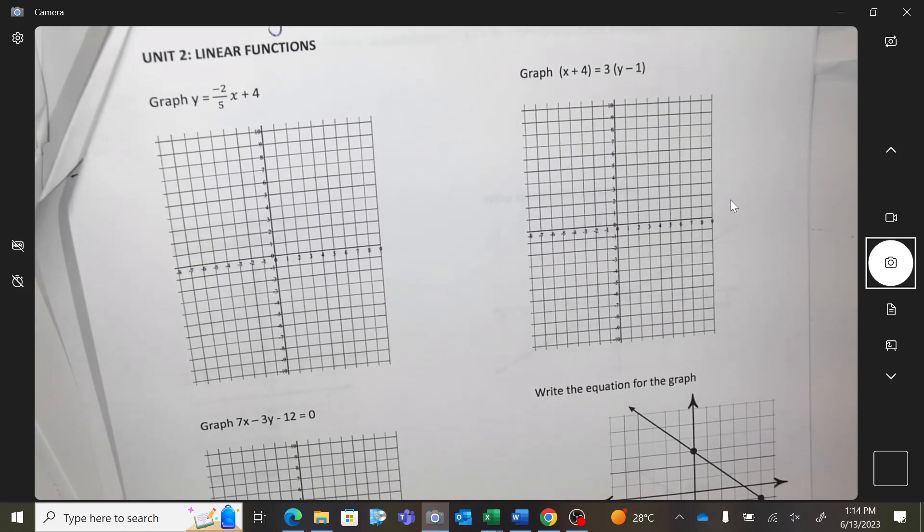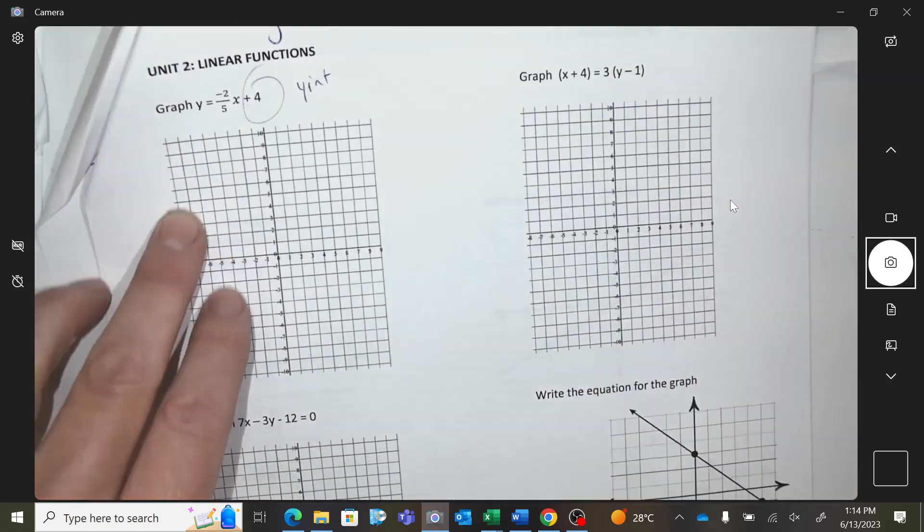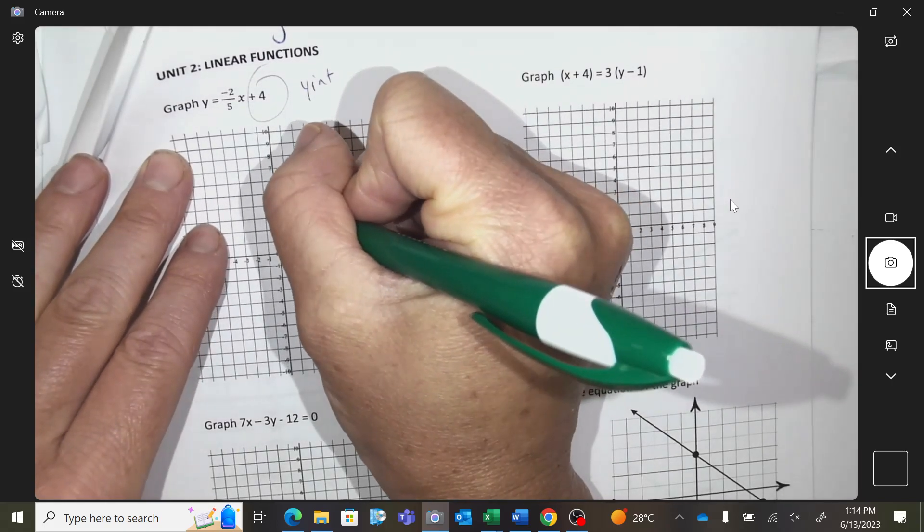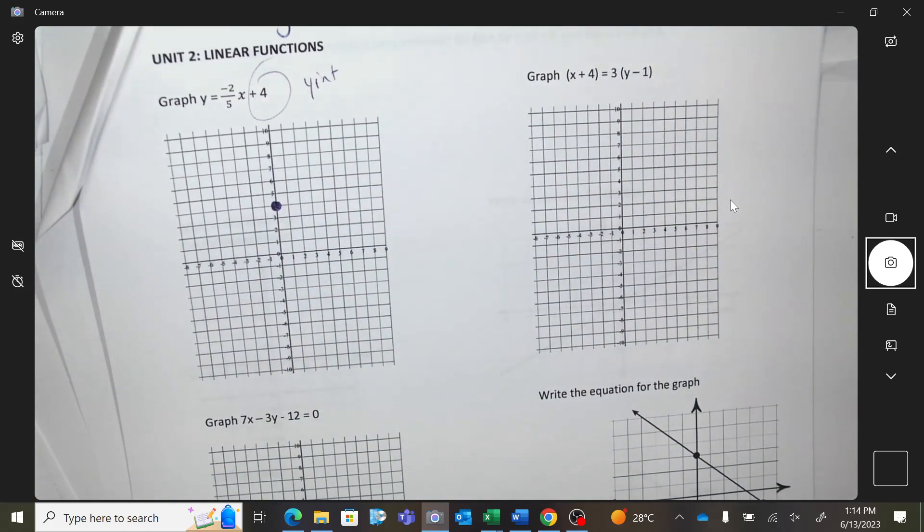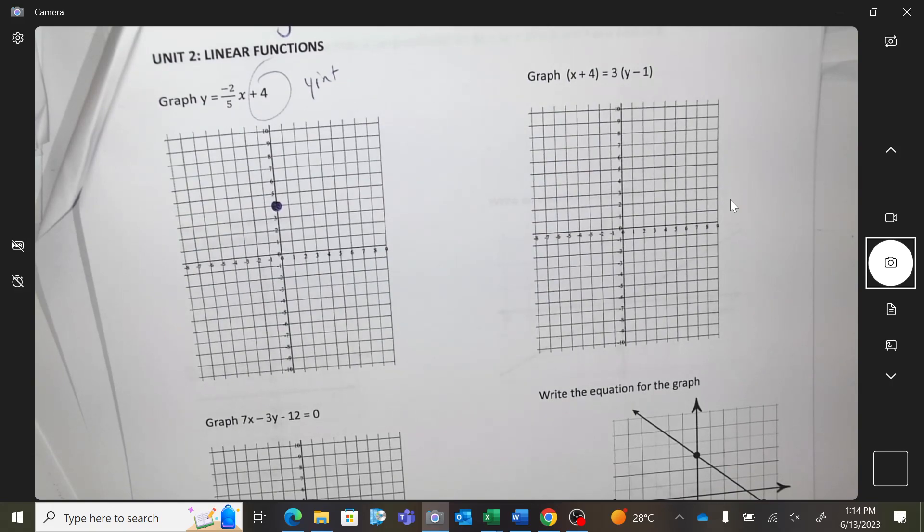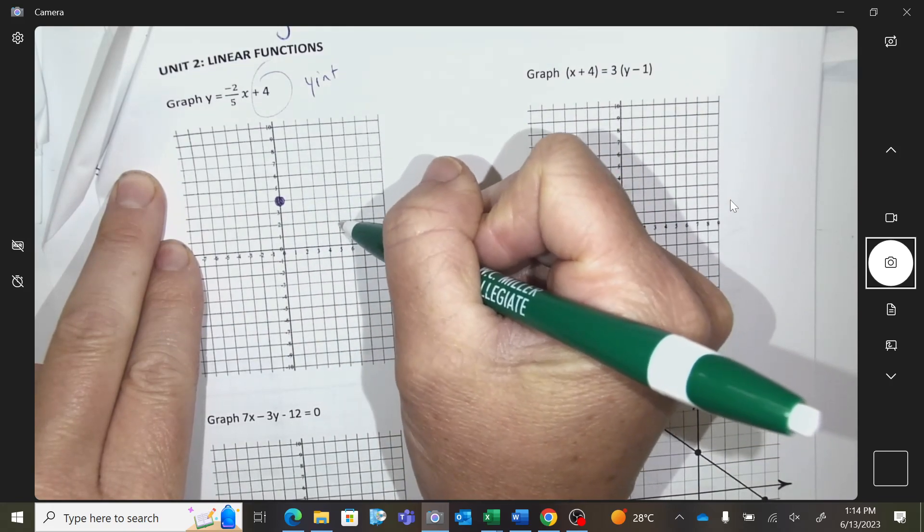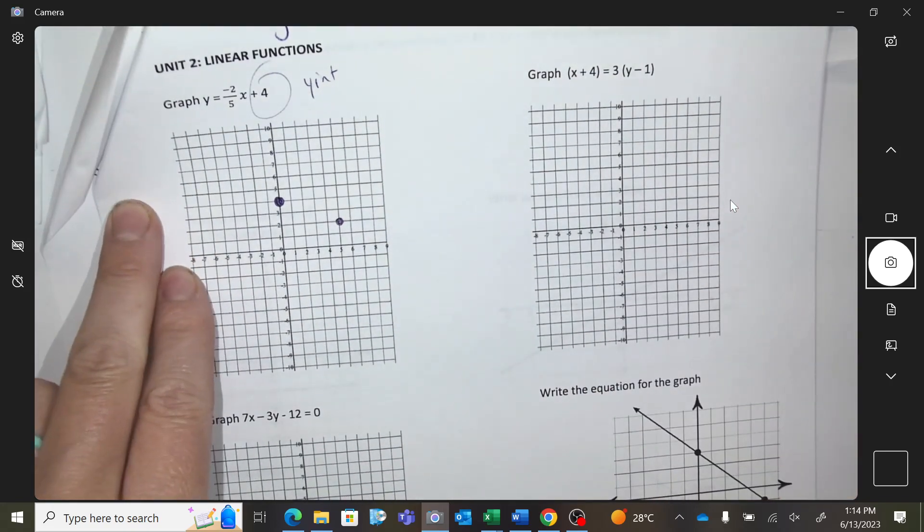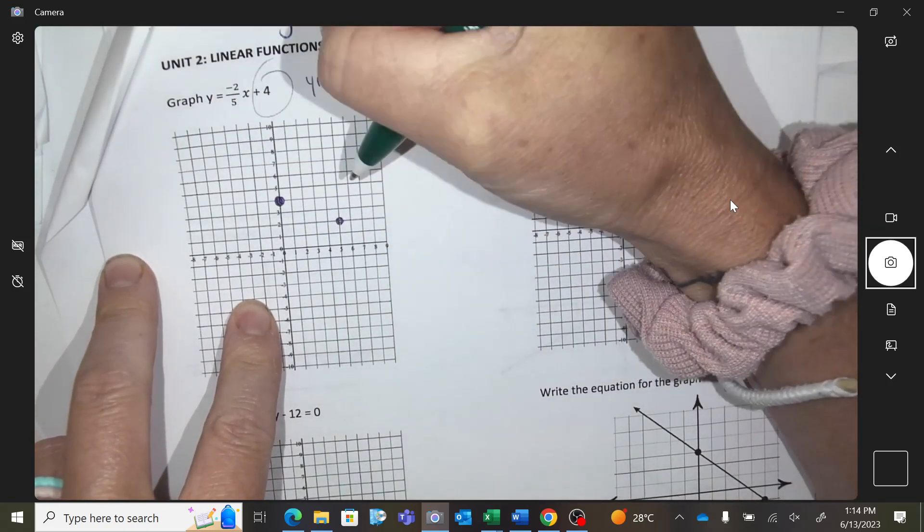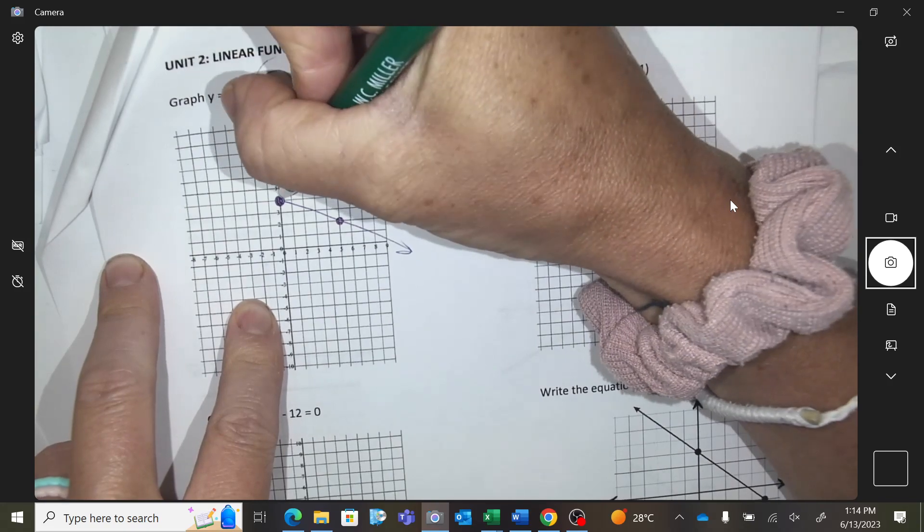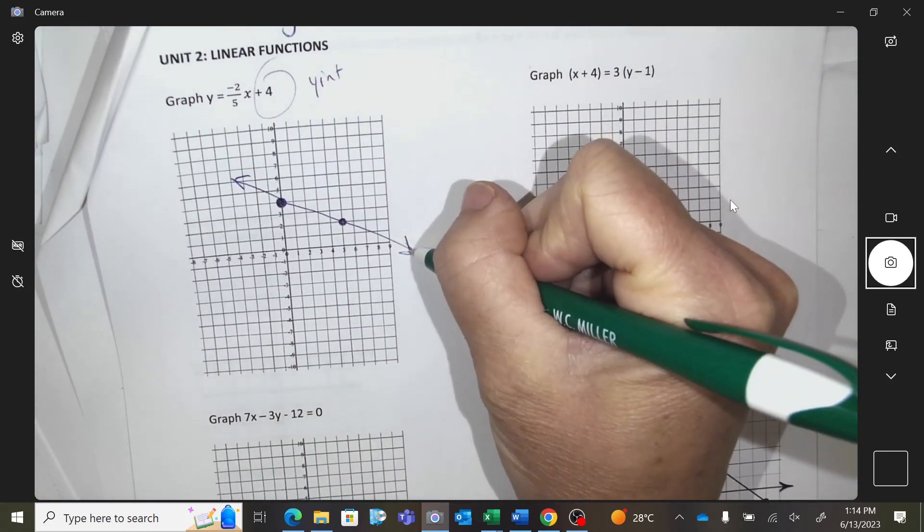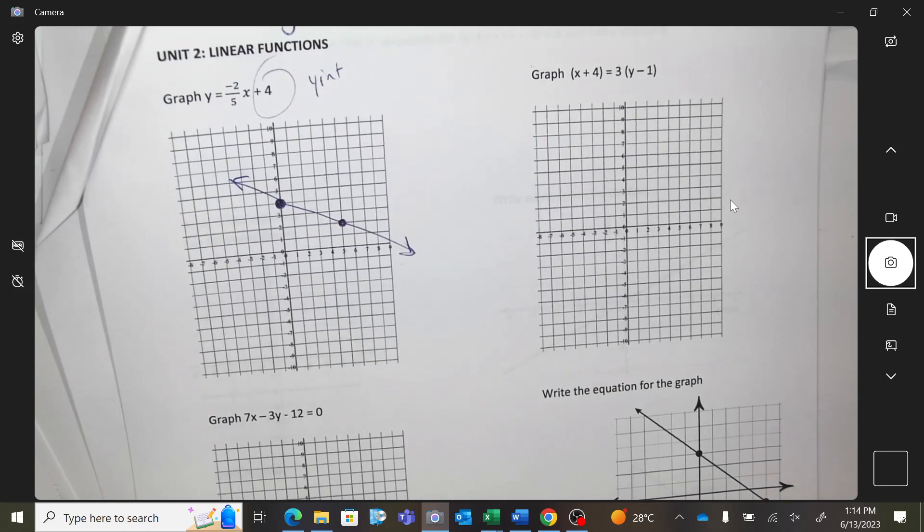Okay, so graphing the first line, we can have a y-intercept is 4, that's the number. And then we're going to go down 2, right 5. Down 2, right 5, once that's complete. You need to put arrows on the end of your line or you would get a deduction to show that it's going on forever.